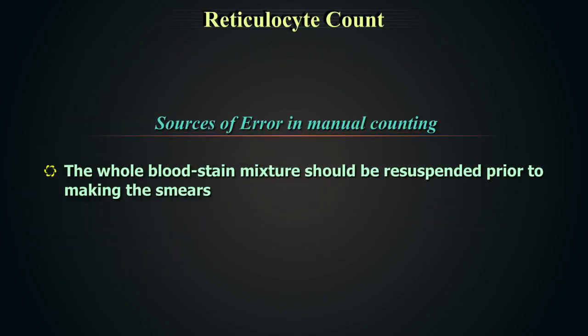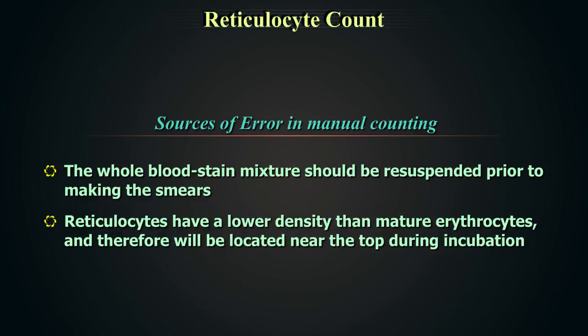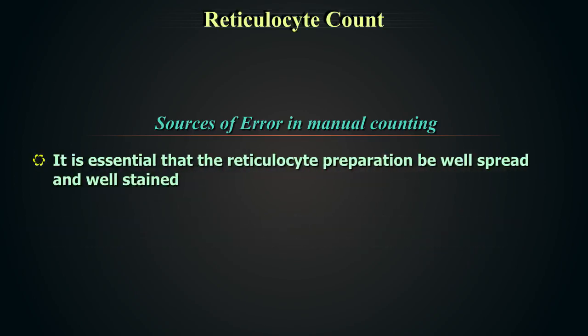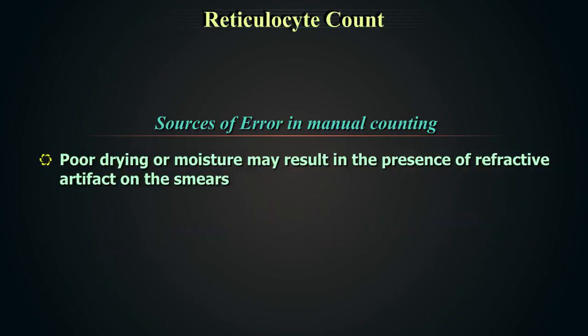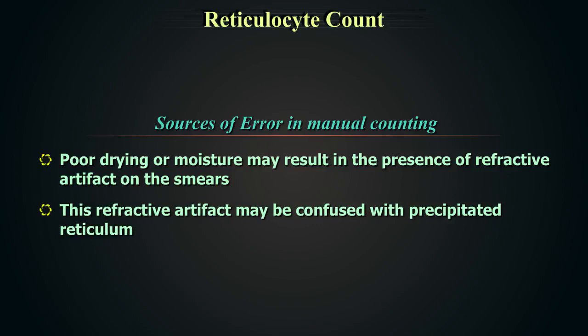The whole blood-stain mixture should be resuspended prior to making smears, as reticulocytes have a lower density than mature erythrocytes and will be located near the top during incubation. It is essential that the preparation be well spread and well stained. Visual acuity and patience of the observer and the resolving power of the microscope also affect accuracy. Poor drying or moisture may result in refractive artifacts on smears that can be confused with precipitated reticulum.